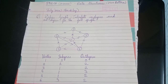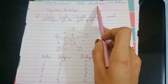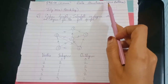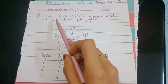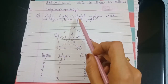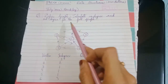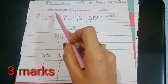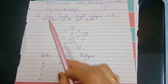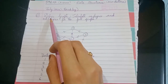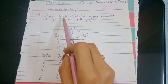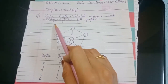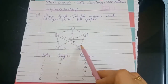Hello and welcome to the video. This video is on the subject Data Structures, course SY BCA, science pattern 2019. The question is: define graph, calculate in-degree and out-degree for the following graph. This question was asked in July 2022. For this question, firstly write down the definition of graph, and next you have to calculate in-degrees and out-degrees for the given graph.